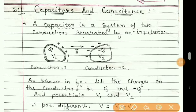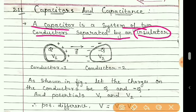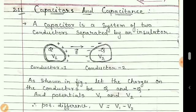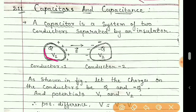A capacitor is a system of two conductors separated by an insulator. As shown in the figure, there are two conductors separated by some distance, and in between this space there is a dielectric medium or there can be a vacuum — meaning there is insulation between the two conductors. The charge from one conductor cannot flow to the other.